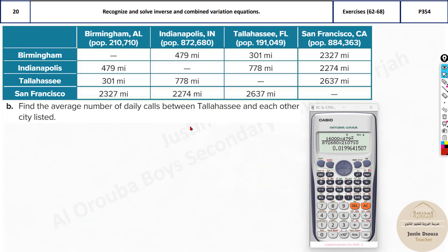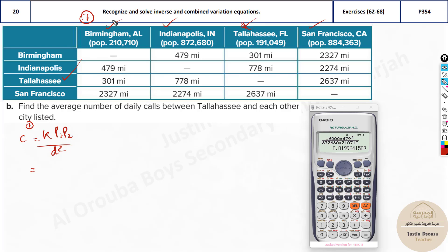This K value of 0.02 will be used for the other parts. They ask us to find the average number of daily calls between Talaise and each other city listed. We use the same formula C equals K times P1 times P2 divided by D squared, finding C for Birmingham, Indianapolis, and San Francisco.